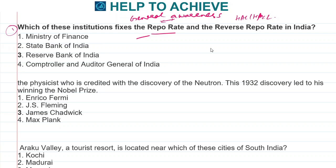Repo rate is the rate at which the RBI gives money to the banks. RBI is the one which takes care of the repo rate and reverse repo rate. So the correct answer is RBI, which is the Reserve Bank of India.